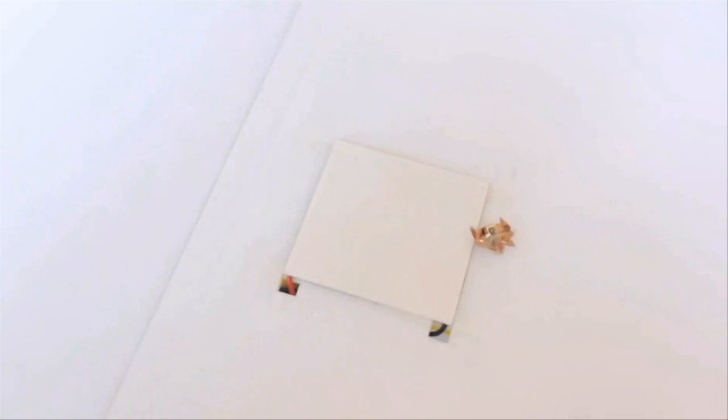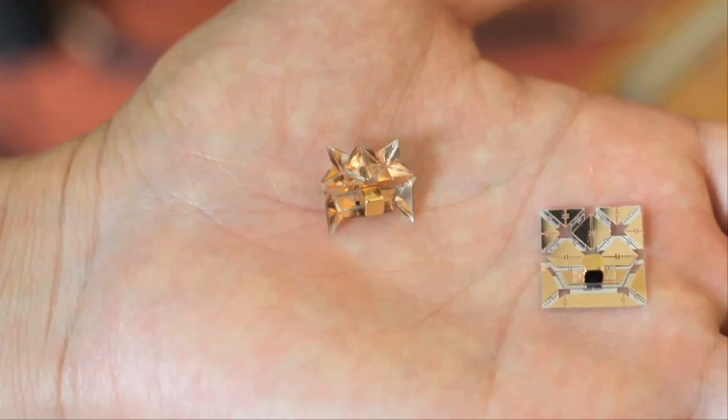For the short term, we see these robots as potentially extremely useful in inspection tasks because they are small and they can travel through very intricate, small, narrow pipelines that are difficult to inspect with today's technology.